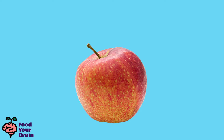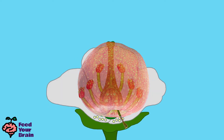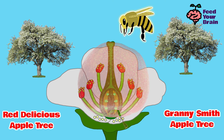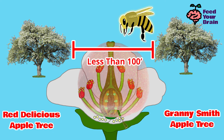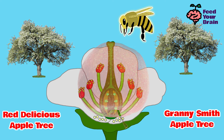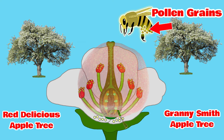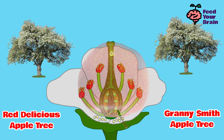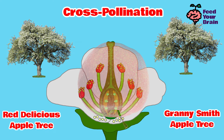That apple you enjoy eating — next time, hold it upside down and imagine it first being an apple blossom flower. For the flower to turn into that apple, a pollinator — typically a honeybee — had to feed from a flower on a different type of apple tree within 100 feet. Pollen from that other tree had to stick to the honeybee, then come off and stick to the stigma, then travel down the pistil's tube — the stile — to pollinate an ovule. This is how cross-pollination of an apple flower works.